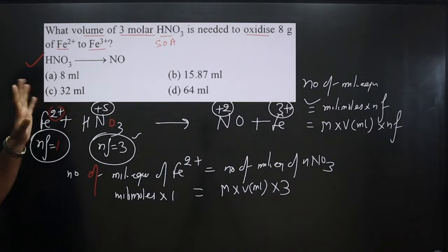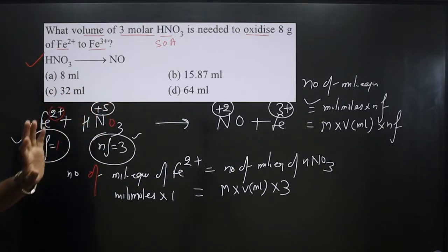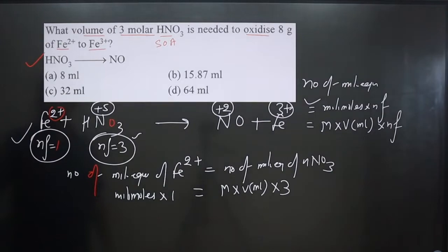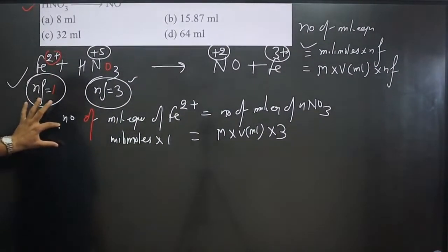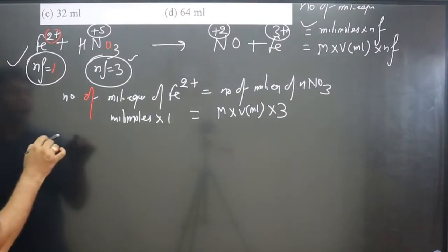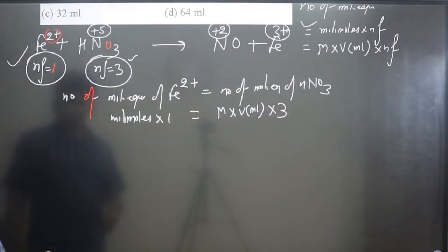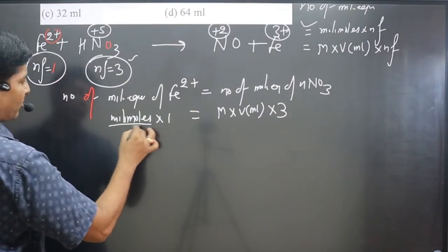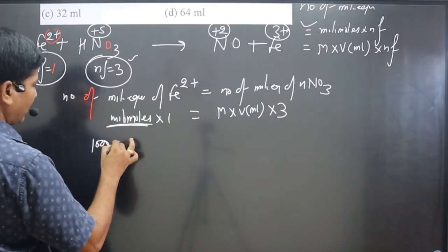Keep in mind, Fe²⁺ is given 8 gram. And millimoles, 1 millimole equals 1000 multiplied by mol. So in case of millimoles, I can write 1000 multiplied by mol, multiplied by 1.